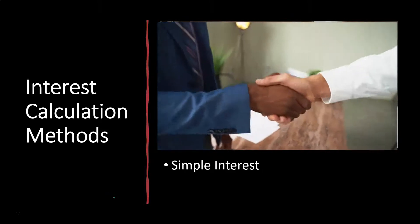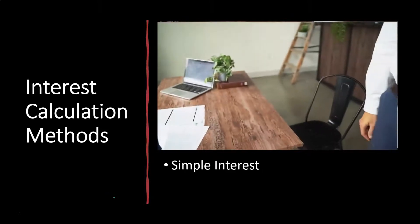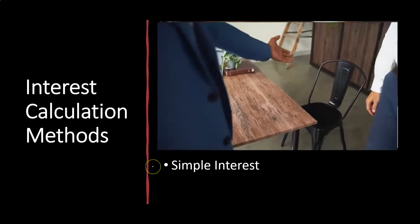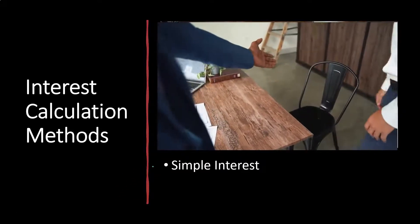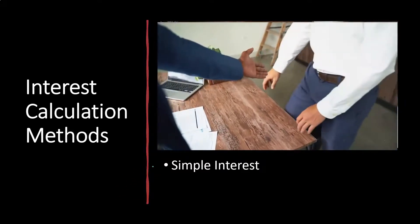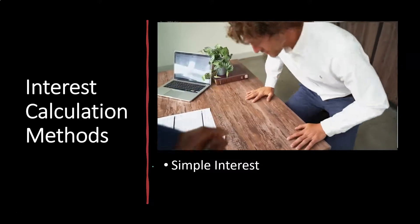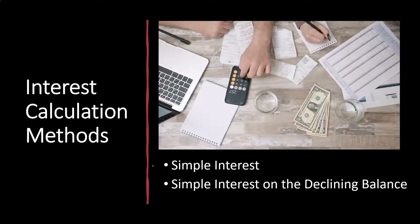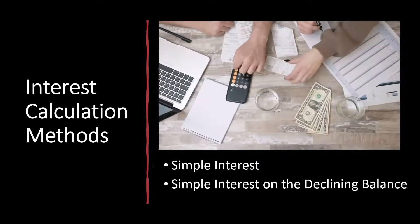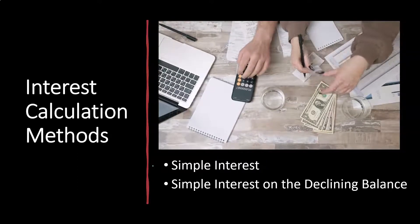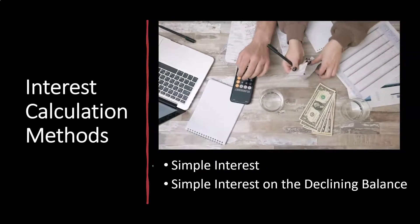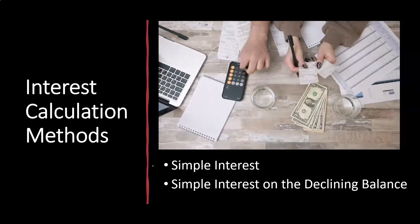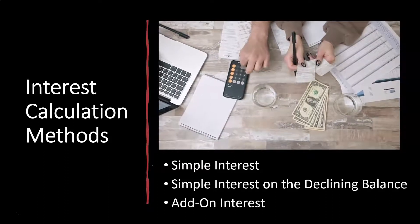The starting point will typically be simple interest. Simple interest is kind of a building block for other types of interest formats that could be set up in a loan. Then we have simple interest on declining balance, which is a concept often related to the typical type of loans that are over a year long — installment-type loans.